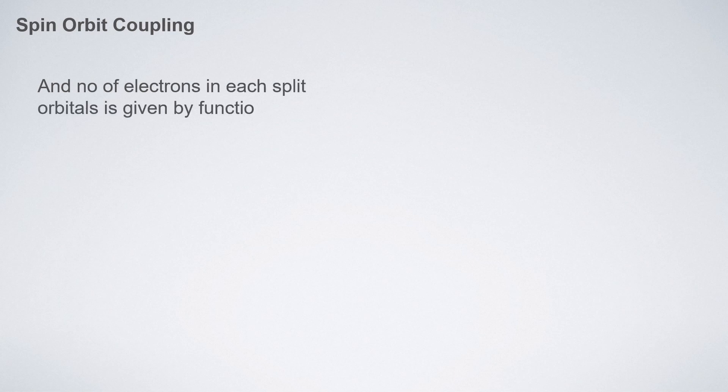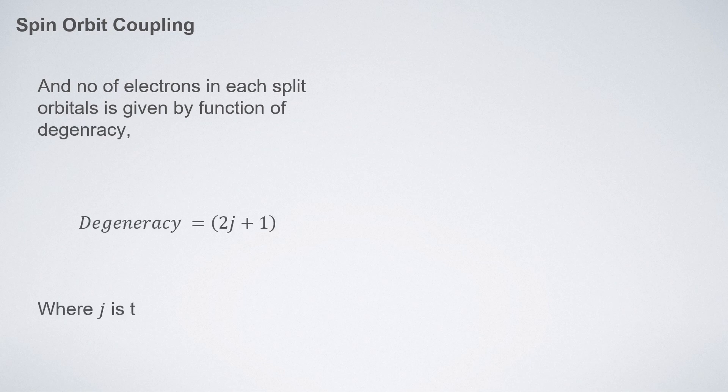Each peak splits into two parts, but the intensity of these two split peaks are not always the same — they are in a particular ratio. This intensity ratio depends on the number of electrons in each state, also known as degeneracy. The formula for degeneracy is 2j + 1, where j is the coupling constant.